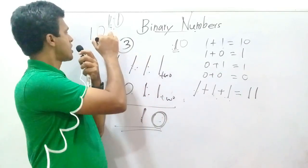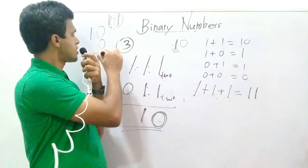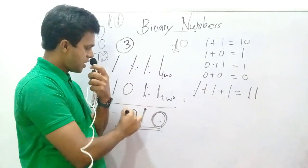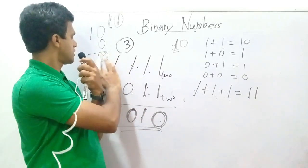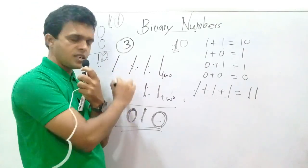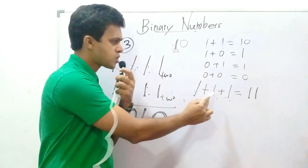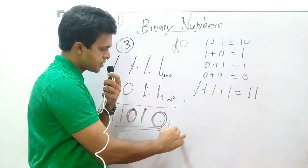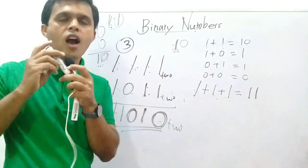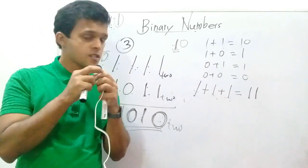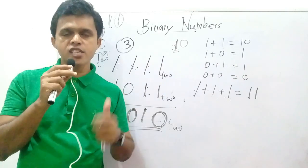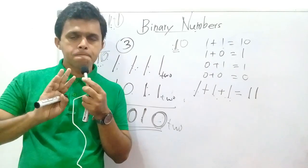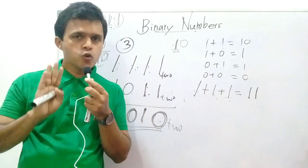One plus one is ten (10); zero plus zero is zero; this one is written here — zero, remainder is one. Then one plus one plus one equals eleven (11), and that remainder one plus the next one: one plus one is ten (10). The answer is one-one-one-zero-one-zero (110110), base two. I think you have realized how addition of binary numbers is done.